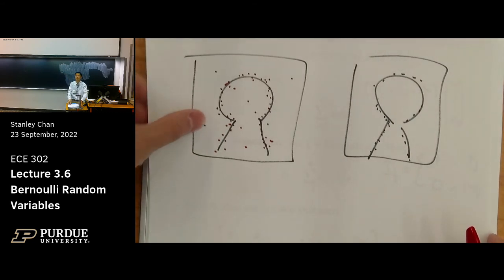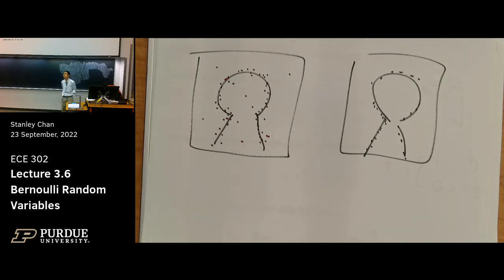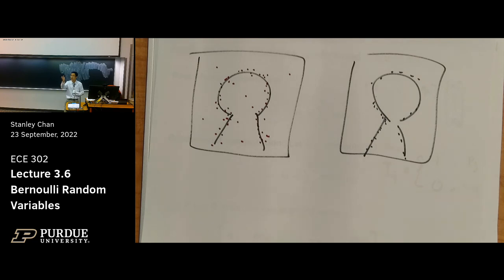Regarding how pj is determined: as the designer, you compute the norm of each column vector — you do it once. Once you know the norm, you define pj according to the norm in whatever way you prefer. A higher norm gets a higher probability. That is the designer's choice.